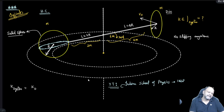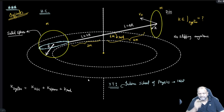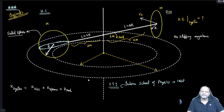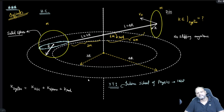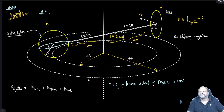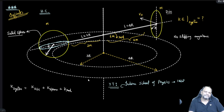I have to write KE = K_disk + K_sphere + K_rod. There is no slipping anywhere; they are moving in two different circles. The radius of one circle is 3r and the radius of the other circle is 4r. This body will have multiple omegas. Let me draw the axes properly. There is one axis here about which rotation will happen, another axis here, and there will also be this vertical axis about which rotation will happen.